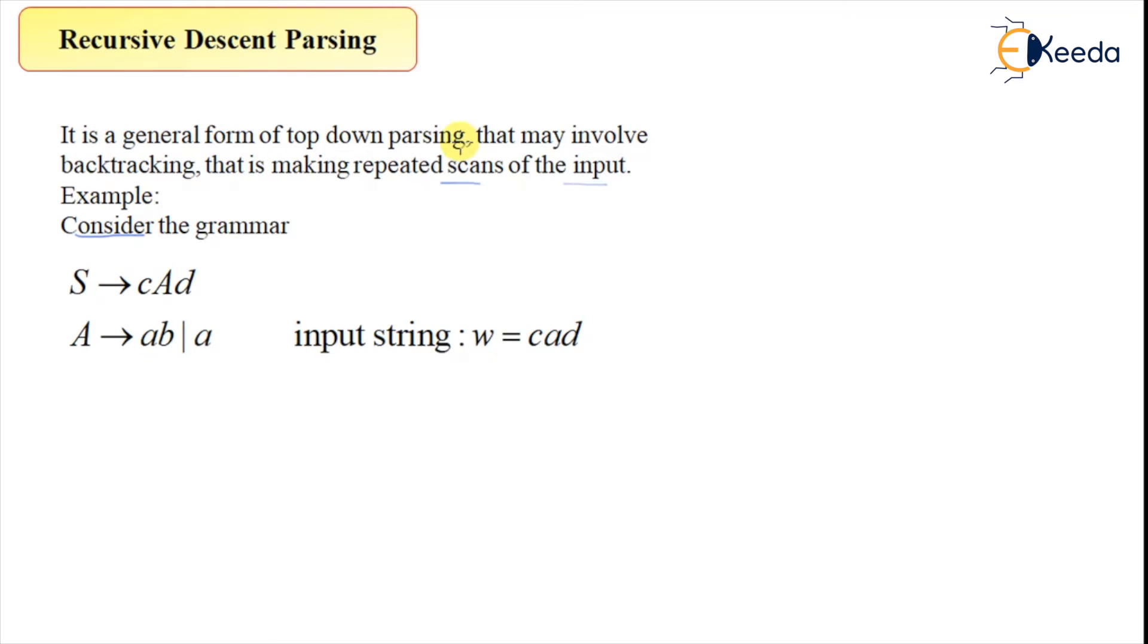This is the general form of top-down parsing and we have to make repeated scans of the input. Consider the grammar: S → cAd, A → ab | a. Let's try to make this top-down parsing work. Let me write W = cad. S derives what? Here is C, then you have capital A, and then you have D.